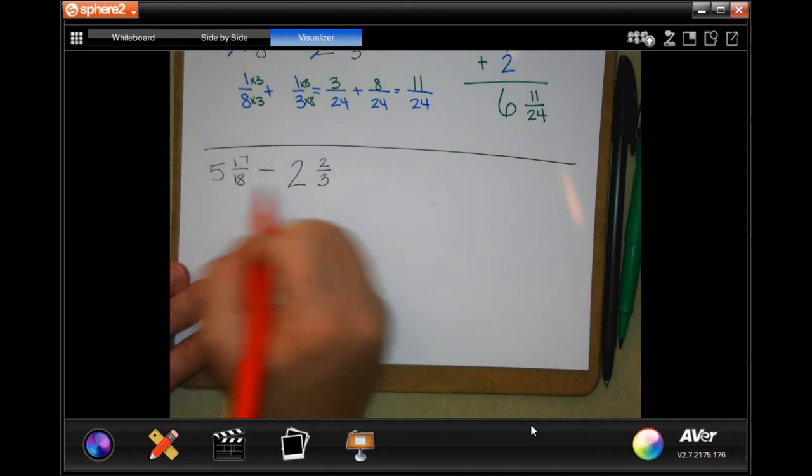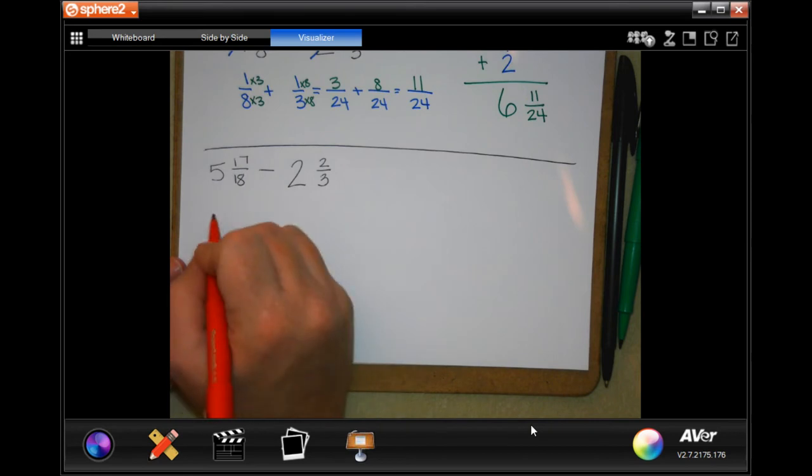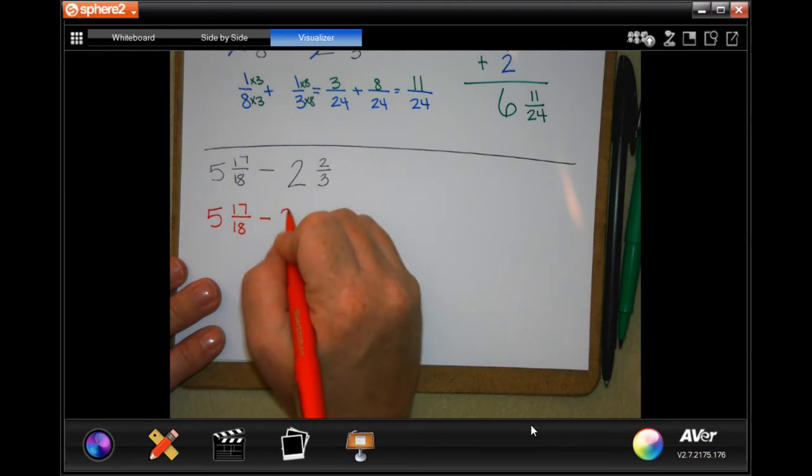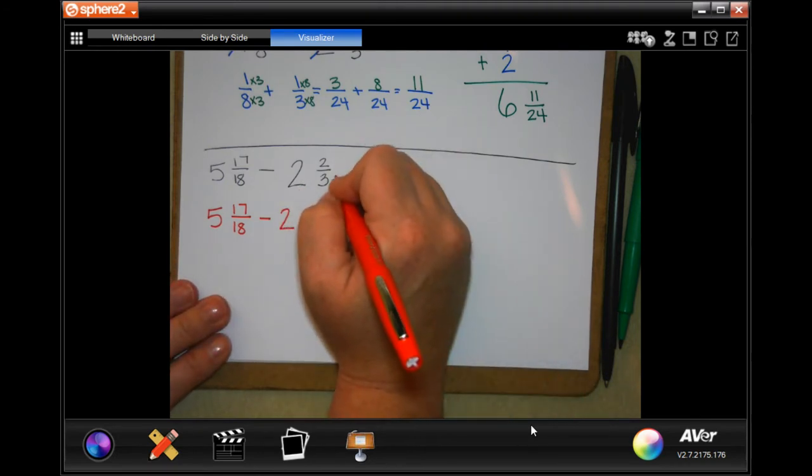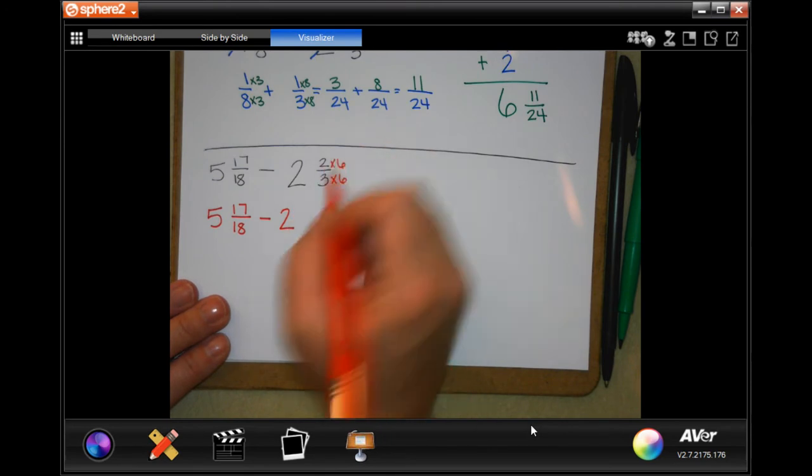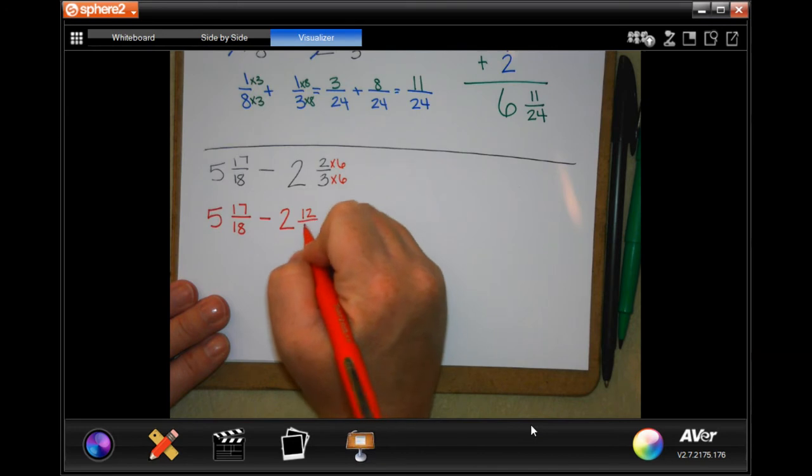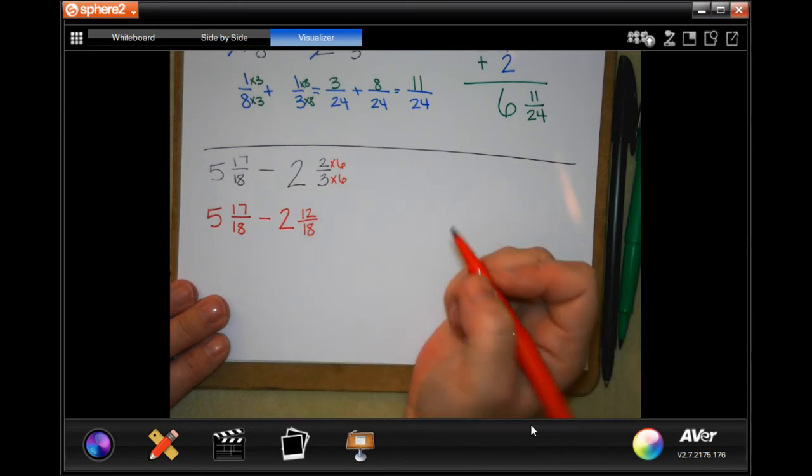So for 18 and 3, the smallest common denominator is going to be 18. So this one I can just rewrite. Our whole number is not going to change. Now to get to 18, I had to multiply 3 by 6. So when I multiply the top by 6, I get 12 over 18.